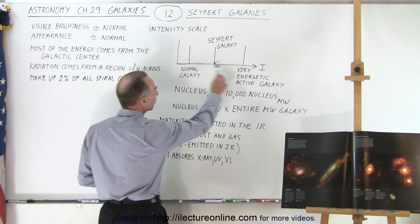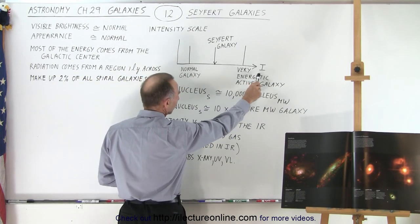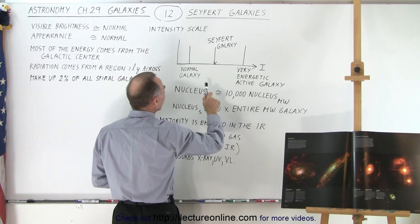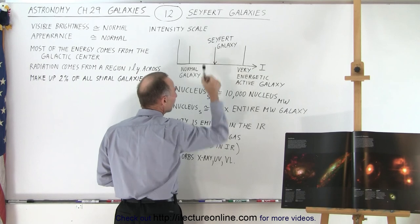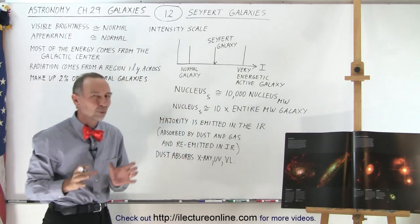If you compare them on the intensity scale, notice the farther you go to the right, the higher the intensity. Here you'd have the normal galaxies, there you have the very energetic active galaxies, and the Seyfert galaxies fall somewhere in between.